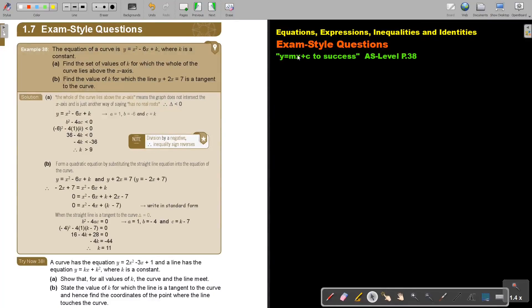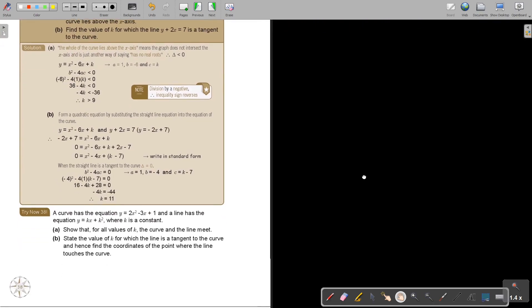In this video, we are going to look at an exam-style question of Chapter 1, Equations, Expressions, Inequalities and Identities. You will find this on page 38 in the Nanomabia AS Level Mathematics textbook, Y equals MX plus C to success.